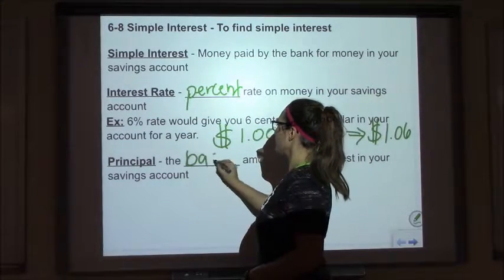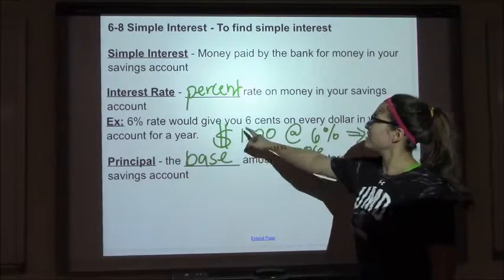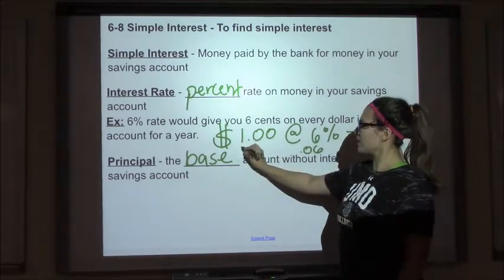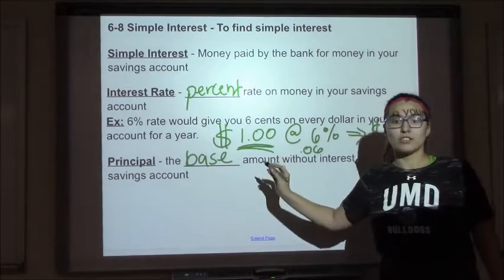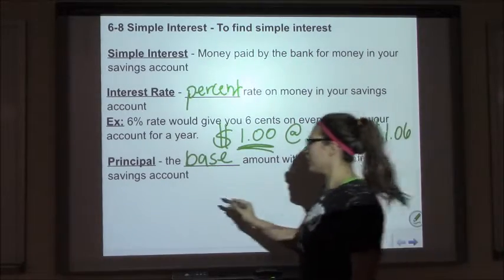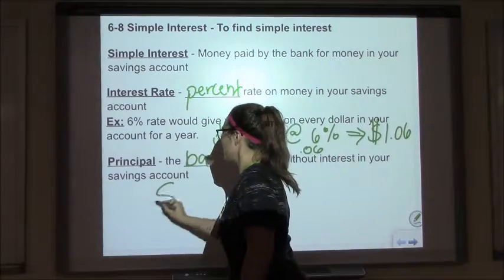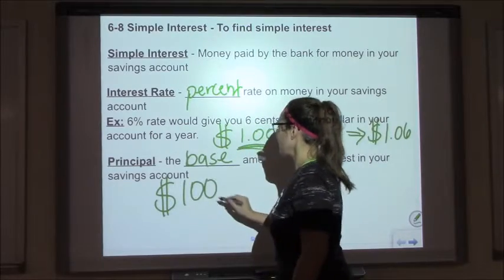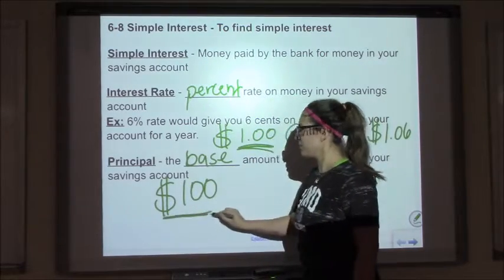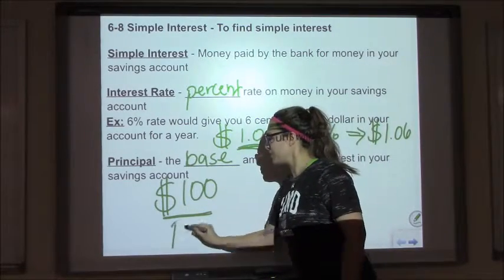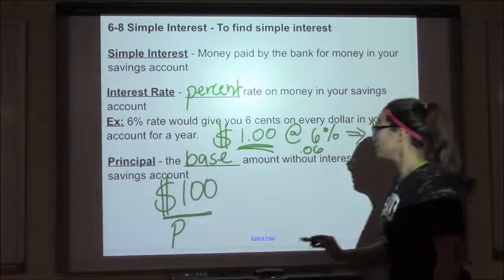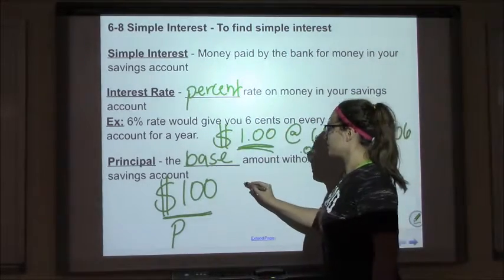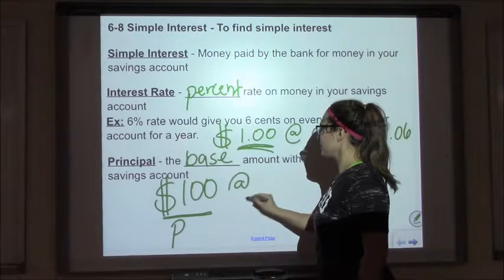The principal is the base or original amount you had. In this example, our base amount is a dollar because that's what we started with. So let's say if we had a hundred dollars in our account, a hundred would be our base or principal — we'll label that P. Let's keep our rate at six percent.